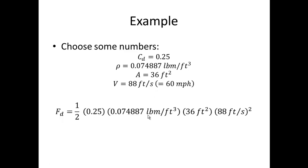Let's take some numbers. Typical numbers, we may have a coefficient of drag of 0.25 and here I've used density of dry air at standard temperature and pressure given in pound mass per cubic feet. I've taken as an example the cross sectional area of 36 feet squared. And I've taken as an example a vehicle going at 60 miles an hour which is the same as 88 feet per second.